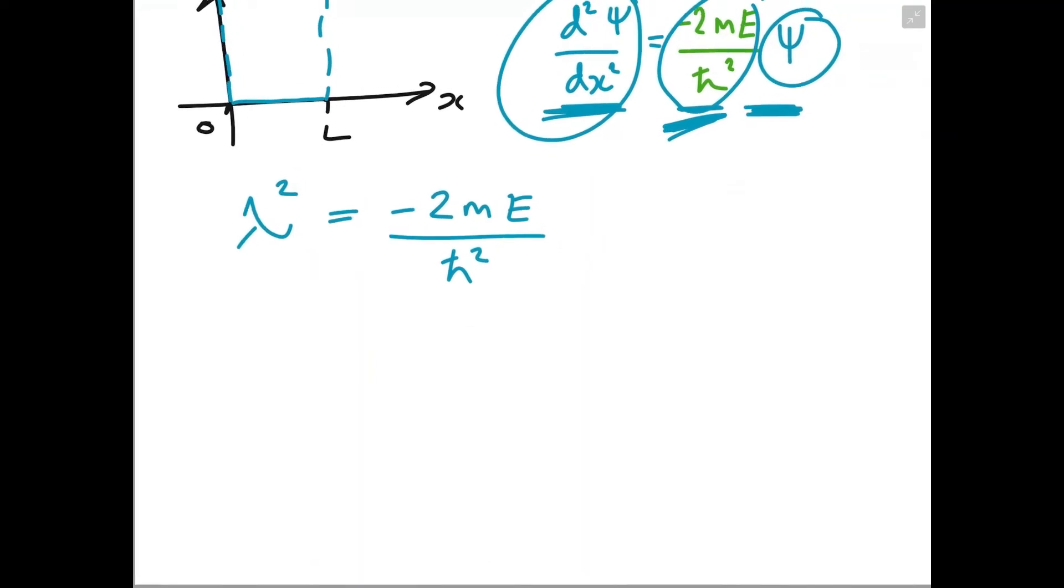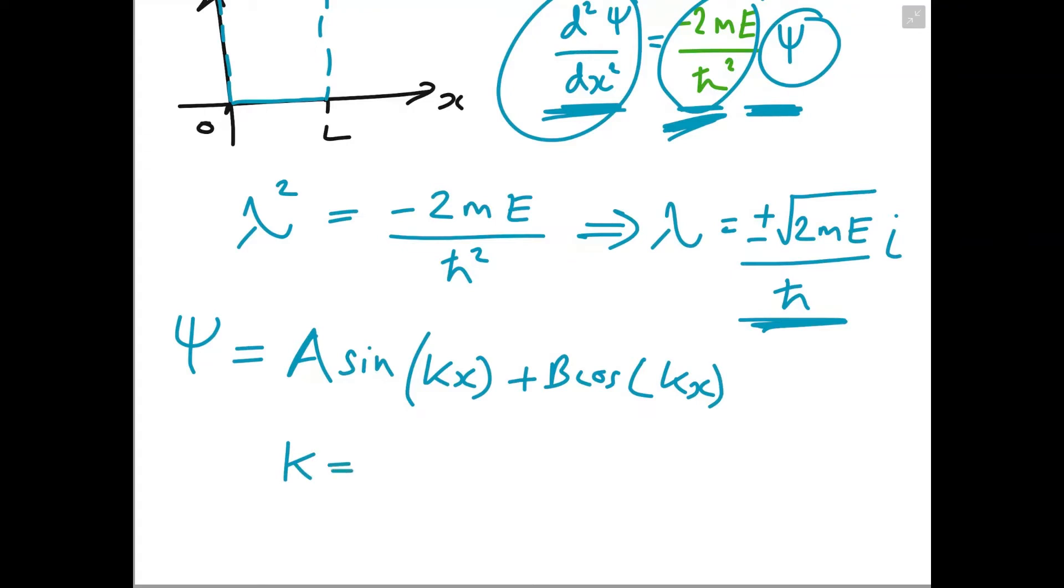So solving for lambda here, we can see that this would imply lambda is equal to plus or minus root of 2mE over ℏ. But remember, λ² was a negative number, so this would be a complex root. So we have two distinct complex roots for our characteristic equation. So that means our general solution for ψ would look like some amount of sine kx plus some amount of cosine kx. And remember, I've just relabeled k to equal the square root of 2mE over ℏ.